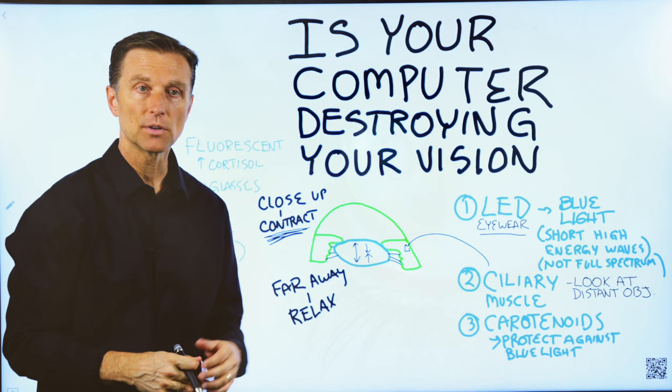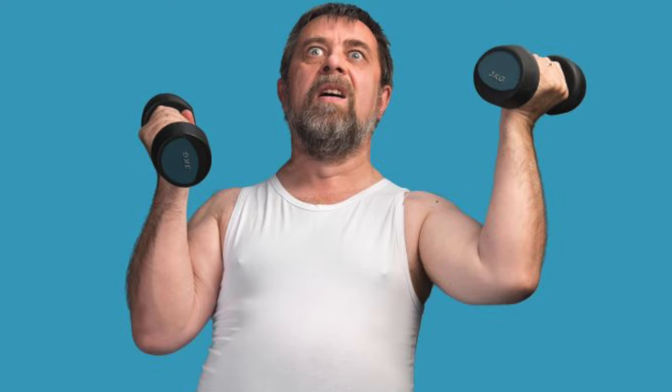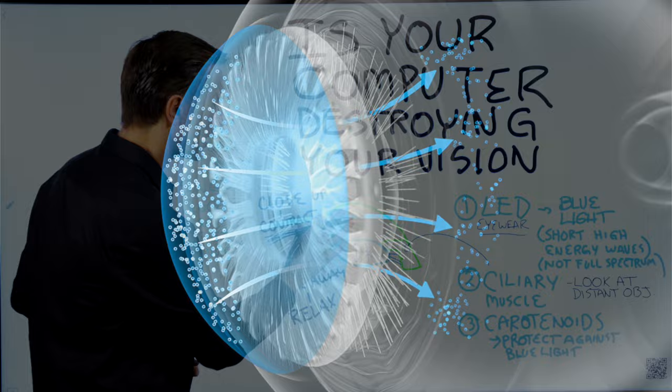When you're sitting in front of your computer close up, the ciliary muscles are in a state of contraction. Can you imagine contracting your muscle for seven hours? That would create a lot of fatigue. Just think of what's happening in the eye. Your lens is being abnormally shaped because of the imbalance and the contraction and relaxation. So here's what you need to do.